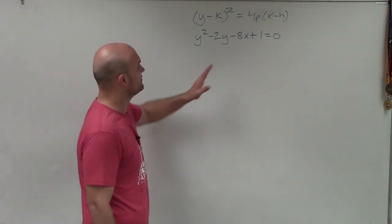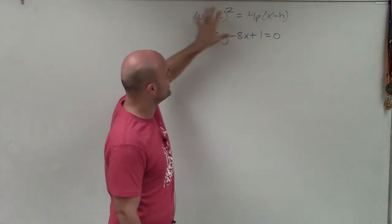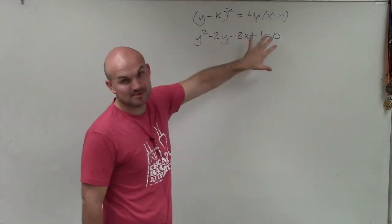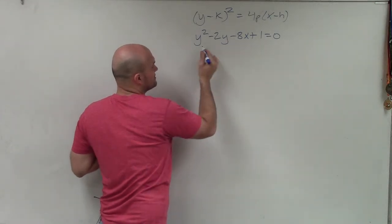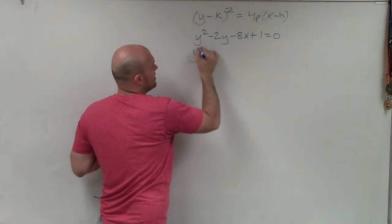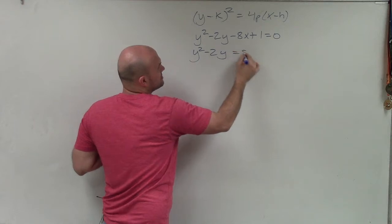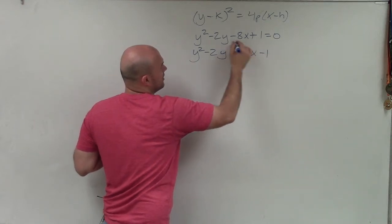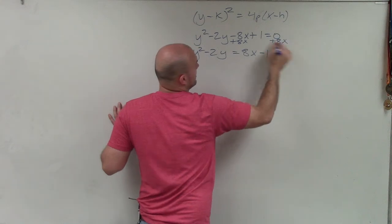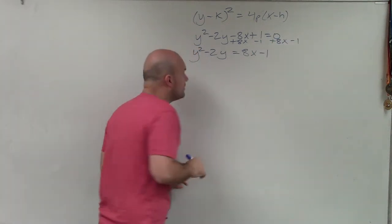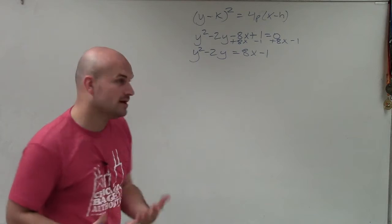To complete the square, the first thing I'm going to want to do is try to mimic this format as much as possible. So I'm going to keep the y's on one side and get everything else to the other side. So I have y squared minus 2y equals 8x minus 1. All I did was add 8x on both sides and subtract 1 on both sides.